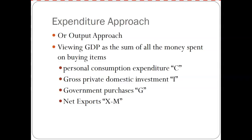Today we are focusing on gross domestic product. There are two ways of figuring this out. The expenditure approach — which is what today is about, also referred to as the output approach — views GDP as the sum of all the money spent on buying items. GDP is the dollar value, or whatever currency you're talking about, of all goods or services produced in a given year. These are final goods, not intermediate goods. One way to figure this out is how much money was spent, because if the money was spent, then the thing must have been made.